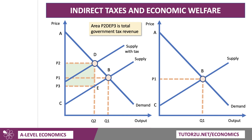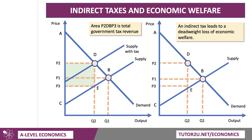There is a fall in consumer surplus and producer surplus, but quite a bit of it goes to the government in the form of tax. What about the deadweight welfare loss? An indirect tax leads to a deadweight loss of welfare — in other words, the total level of consumer and producer surplus has gone down. That welfare loss is the area D, B, E. The quantity has gone down, the price has gone up, and the price the producer gets is down to P3. That's the deadweight welfare loss, and it's a good area to consider when answering questions on indirect taxes.